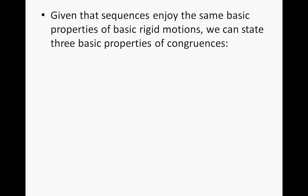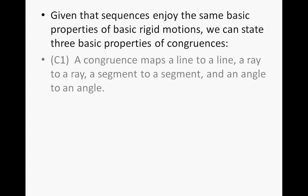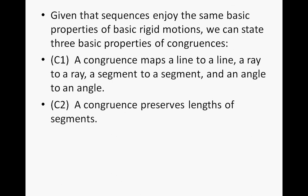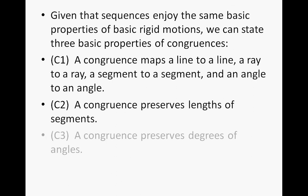Given that sequences enjoy the same basic properties as basic rigid motions, we can state the three basic properties of congruence. First, a congruence maps a line to a line, a ray to a ray, a segment to a segment, and an angle to an angle. Second, a congruence preserves lengths of segments. Third, a congruence preserves degrees of angles.